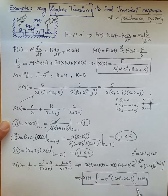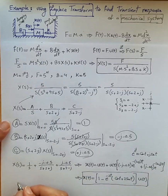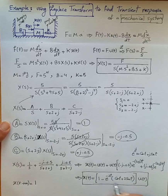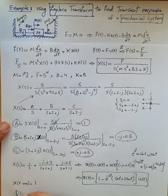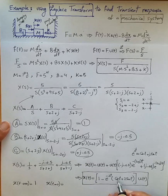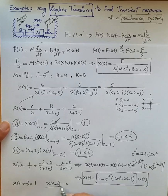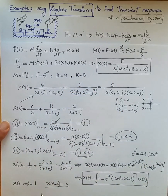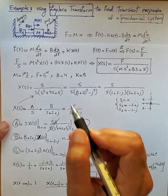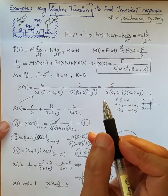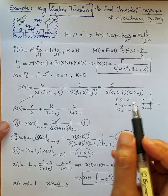From this, we can see that as time approaches infinity, the exponential term goes away and the displacement x(∞) = 1 — the steady-state value. At time zero, sin(0)=0, cos(0)=1, e^0=1, so x(0) = 1−1 = 0, which is expected since we assumed zero initial conditions. This example illustrated how to use Laplace transform to find the transient response of a mechanical system. Thank you.